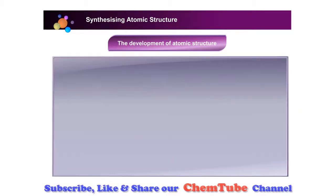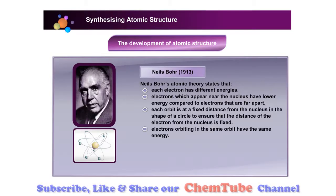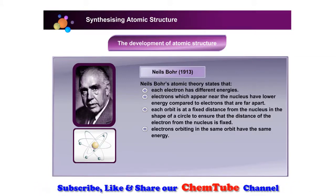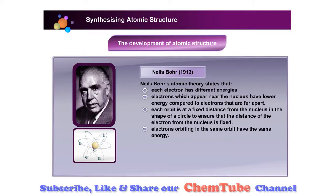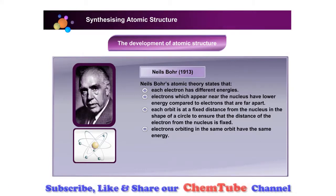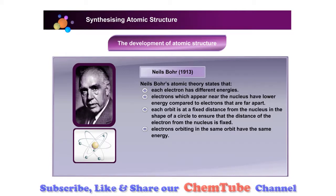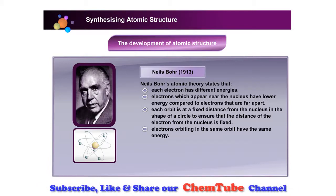Niels Bohr's atomic theory states that each electron has different energies. Electrons which appear near the nucleus have lower energy compared to electrons that are far apart. Each orbit is at a fixed distance from the nucleus in the shape of a circle.